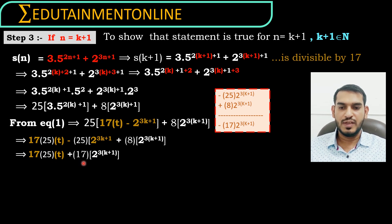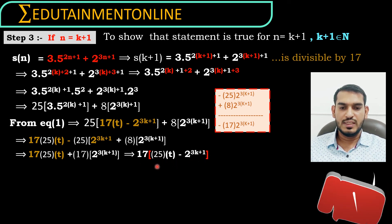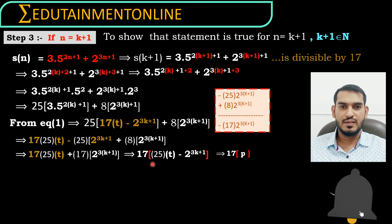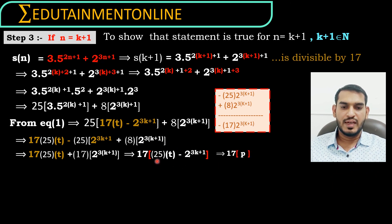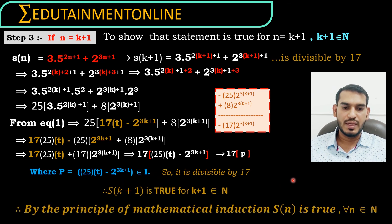In these two terms we have 17 common, so we can write this as 17 times 25t minus 2 power 3k plus 1, which is divisible by 17. We can write this as 17 times p, so this is exactly divisible by 17. Therefore s of n is true for n equals k plus 1. Therefore by the principle of mathematical induction the statement is true for all natural numbers.